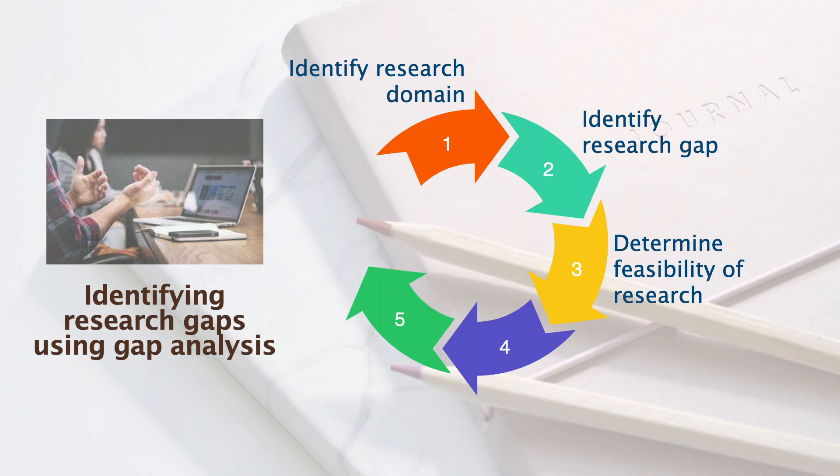Feasibility of a research gap depends on the availability of literature, data, and tools for analysis. The type of research gap to be selected is influenced by the availability of the literature and its ability to contribute to the body of knowledge. The whole process should then bring us to the expected outcome. A wrong choice of research gap will not lead to the expected outcome. Thus, it is important that you are clear of what you expect out of your study. If the expected outcome does not lead to any contribution to the body of knowledge, then the methods used to identify research gaps need to be revised.